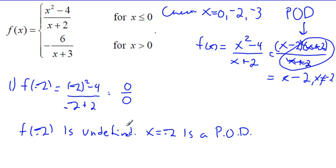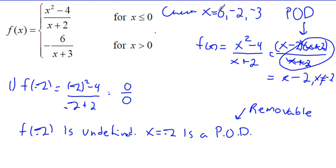You might be asked: is it removable or non-removable? This is a removable discontinuity — and that's the only time you'll have a removable discontinuity in these types of questions: when you have some type of cancellation with your function. Every other time it'll be a vertical asymptote, or possibly a jump discontinuity at the interval boundary. So look for a cancellation to identify a POD and removable discontinuity.